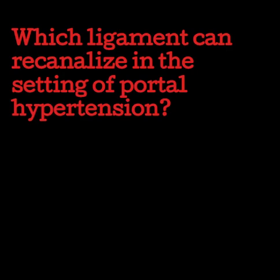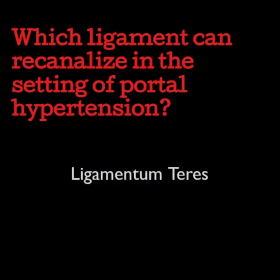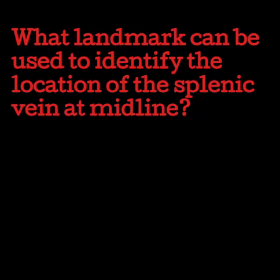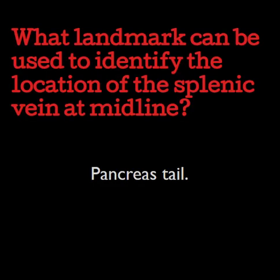Which ligament can recanalize in the setting of portal hypertension? The ligamentum teres. Quite often seen in the transverse view of the left lobe, the ligamentum teres will appear as a patent vessel with color flow within. What landmark can be used to identify the location of the splenic vein at midline? The pancreas tail. The splenic vein at the midline is on the posterior side of the pancreas tail and appears red.